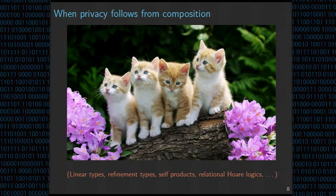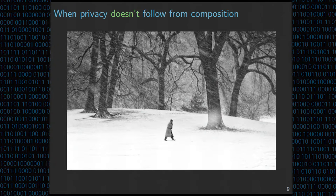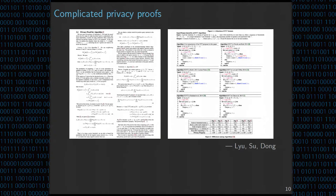However, when the privacy proof does not follow by composition — and there are a few algorithms where the known proofs do not follow this principle — the situation is not so great. There has not been much formal verification work for verifying these kinds of private algorithms. This is really too bad, because even on paper, these proofs are often the most complex. Since these proofs do not follow from the clean composition principle, they often involve ad hoc reasoning or a lot of reasoning about probabilities, and can be quite subtle.